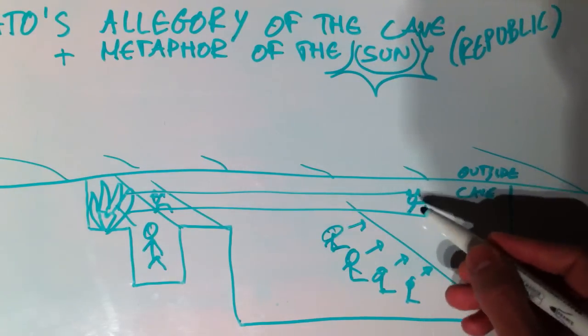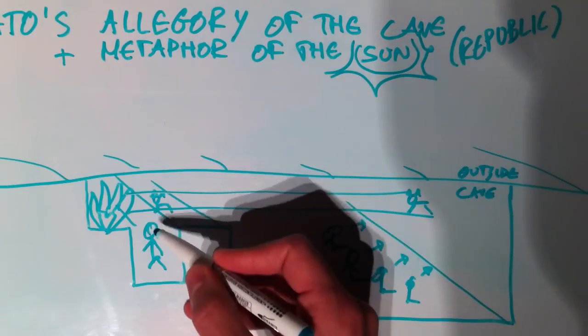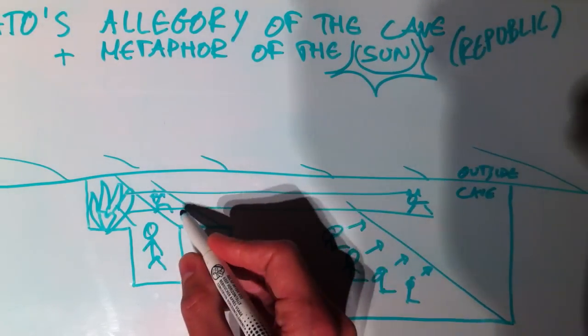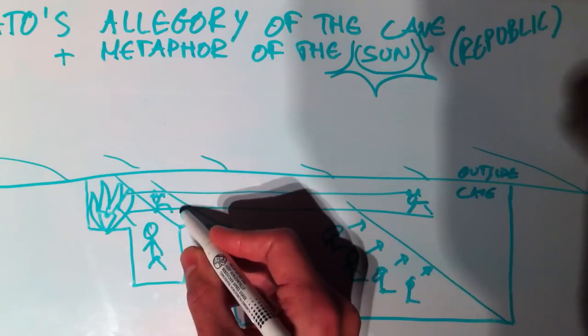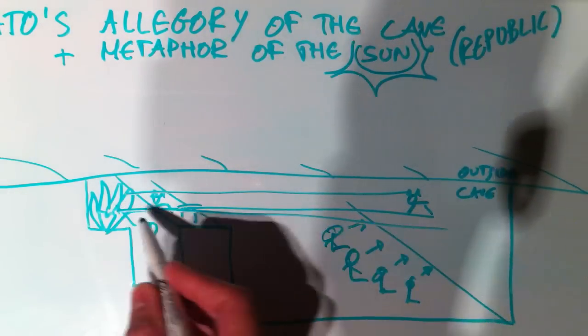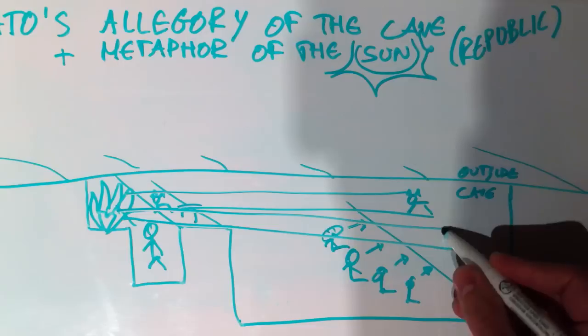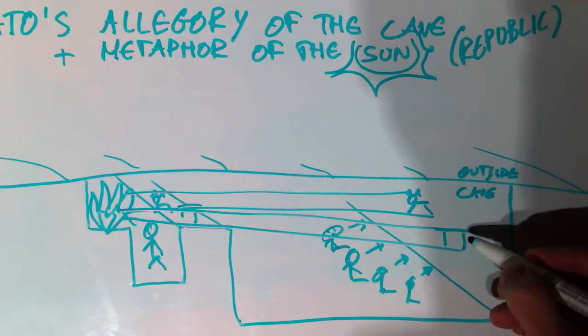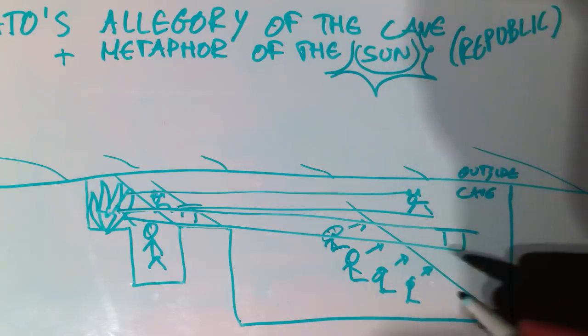But it's the shadow of the object these guys are carrying. Somebody here carries a table, and what happens? The fire casts another shadow. And on the wall, the front wall of the cave, the shadow of the table can be seen by the prisoners.